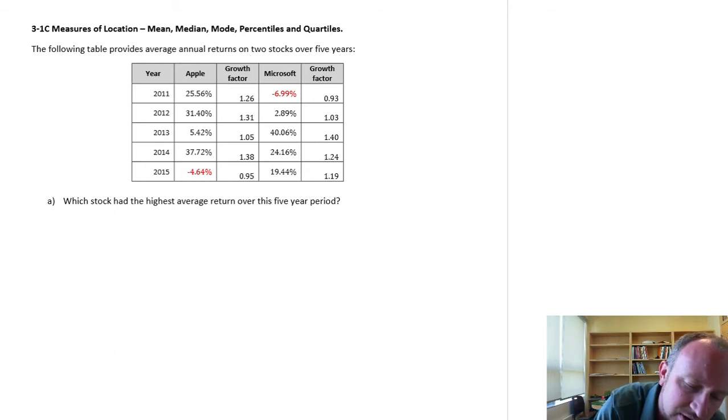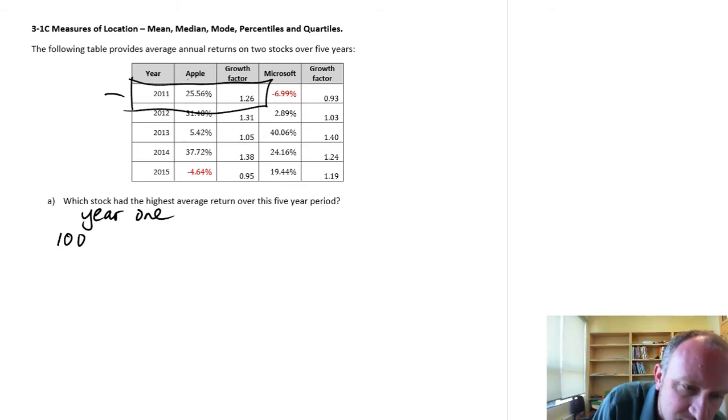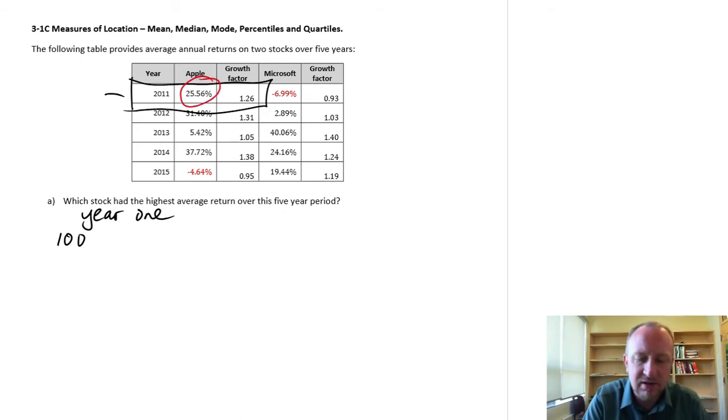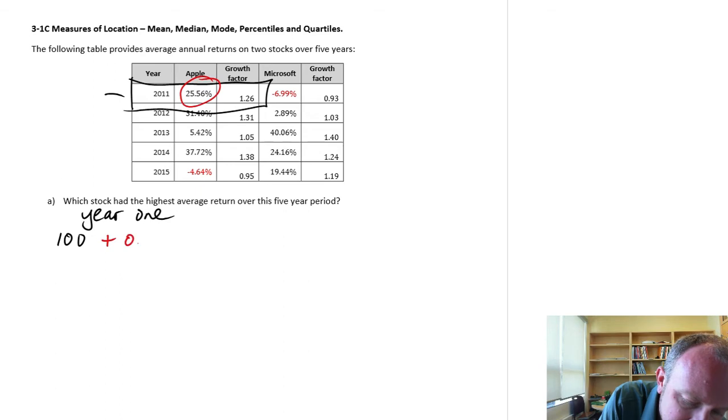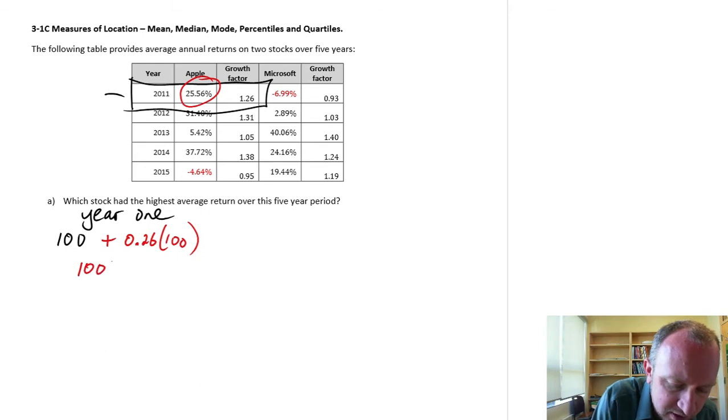So if we start, let's just look at Apple here. Let's look at this first entry. So let's start with a hundred dollars. So at the beginning of year one, I have $100 is the value of my shareholdings of Apple stock. Now that grew in that one year period that I gained, let's round it to keep it easy, 26% growth is what I saw in the value. So at the end of that year, I gained 0.26 times 100. It was the gains that I earned, maybe capital gains of that stock.